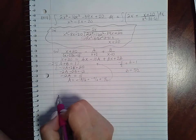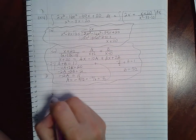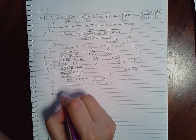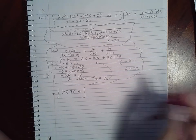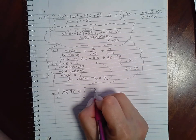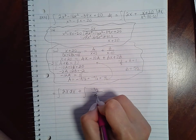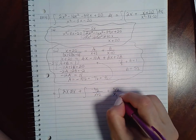So now I can rewrite my integral. The integral is going to become the integral of 2x dx plus the integral of these two fractions. Negative 3 halves over x plus 2 plus 5 halves over x minus 10.